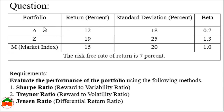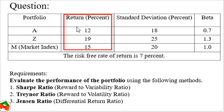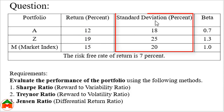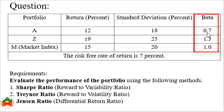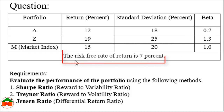Let's practice with a practical problem. We have Portfolio A, Portfolio Z, and the Market Index portfolio. The actual return of Portfolio A is 12%, and for Portfolio Z it is 19%. The standard deviation — representing total risk — is 18% for Portfolio A, 25% for Portfolio Z, and 20% for the market. The beta (systematic risk) is 0.7 for Portfolio A, 1.3 for Portfolio Z, and 1.0 for the market. The risk-free rate is 7%.